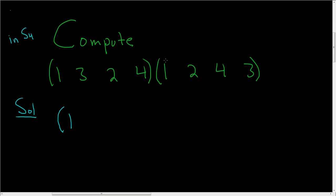And then we ask ourselves, where does 1 go? Well, 1 is getting sent to 2, but over here, 2 is going to 4. So that means that 1 goes to 4. Again, 1 is going to 2, and here 2 is going to 4, so 1 goes to 4.